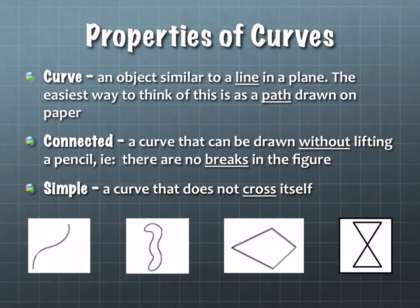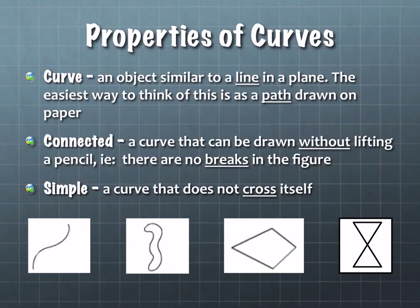A curve is any object similar to a line in a plane. The easiest way to think of this is it's a path drawn on paper. A curve is considered to be connected if it can be drawn without lifting the pencil. In algebra, the word we would use here is continuous, but for geometry we call it connected because continuous has to do with certain types of curves.